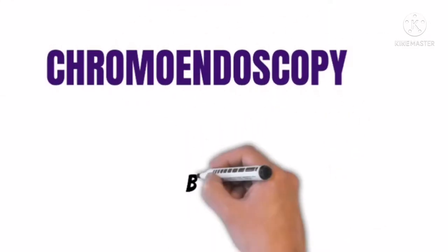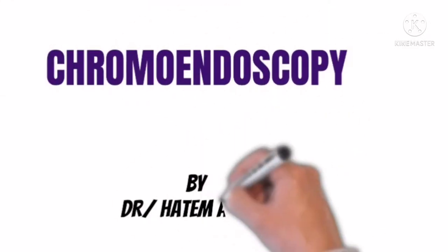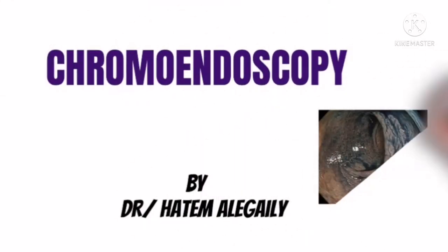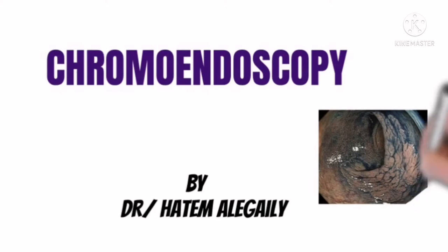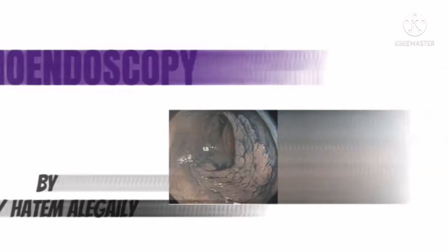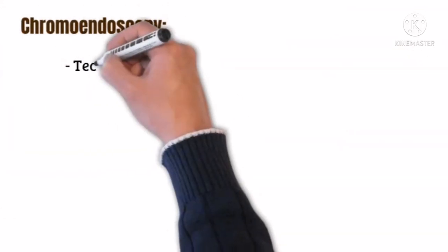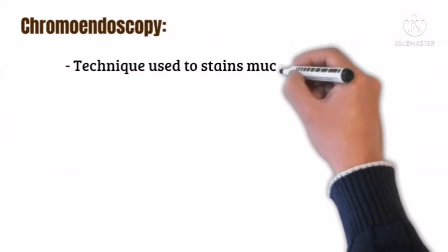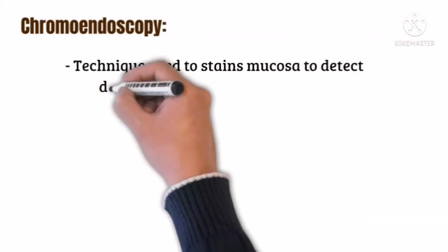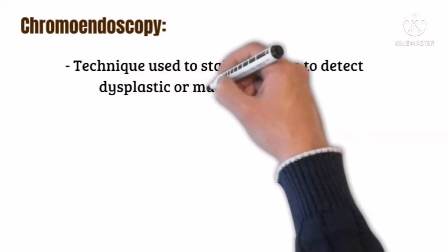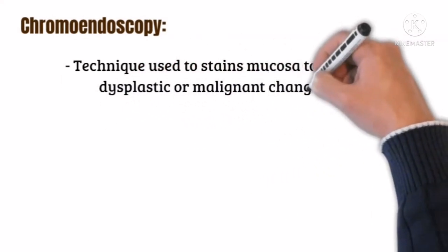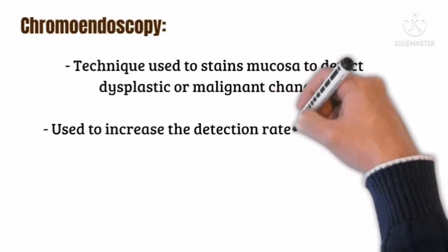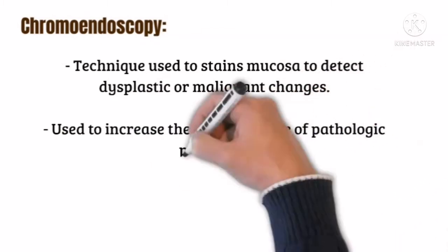In this lecture, we will talk about chromoendoscopy. Chromoendoscopy is a technique used to stain the mucosa to detect dysplastic or malignant changes, used to increase detection rate of pathologic processes.